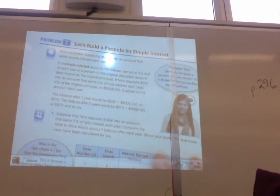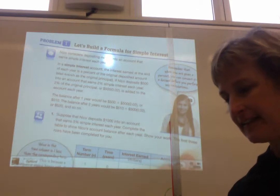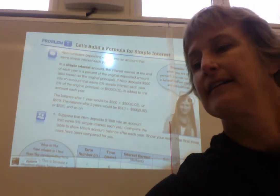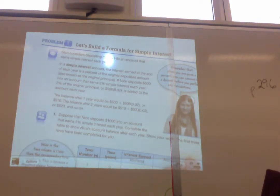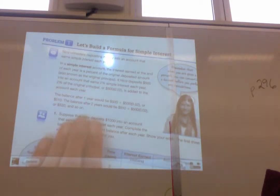Nico considers deposit money into an account that earns simple interest each year. In a simple interest account, the interest earned at the end of the year is a percent of the original deposit amount, also known as the original principal. Nico deposits $500 into an account that earns 2% of simple interest each year. 2% of the original principal, or $500, is added to the account each year. The balance after one year would be $500 plus $10, or $510. The balance after two years would be $510 plus $10, or $520, and so on.